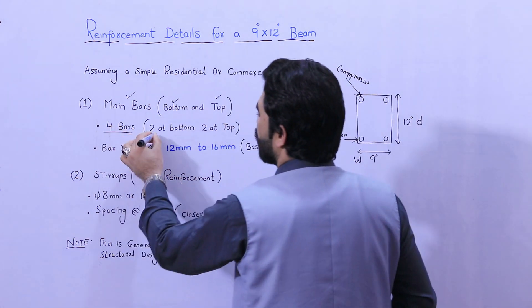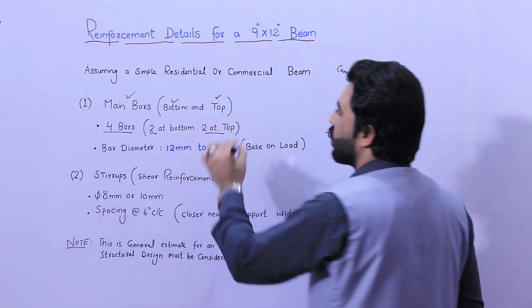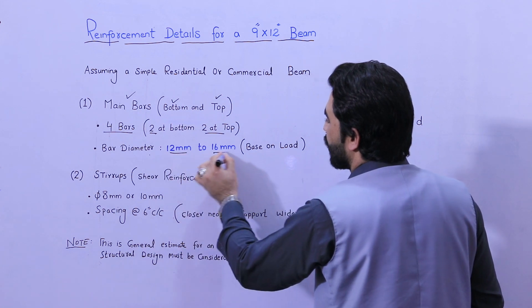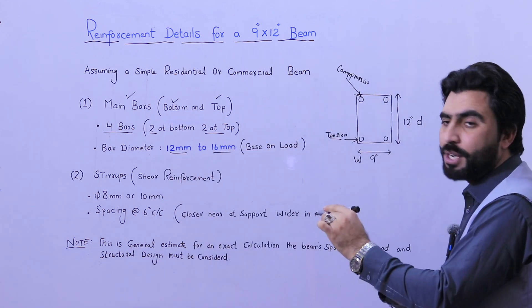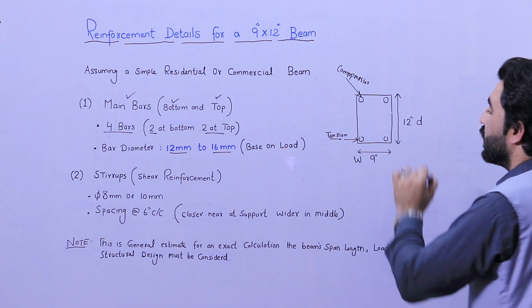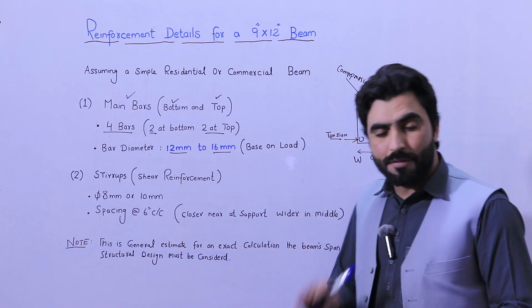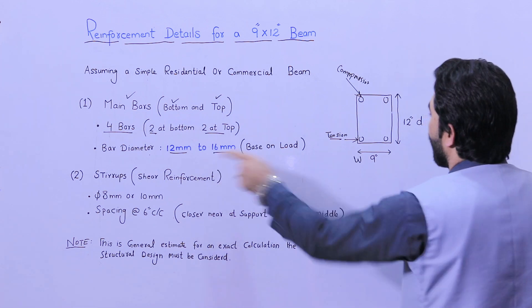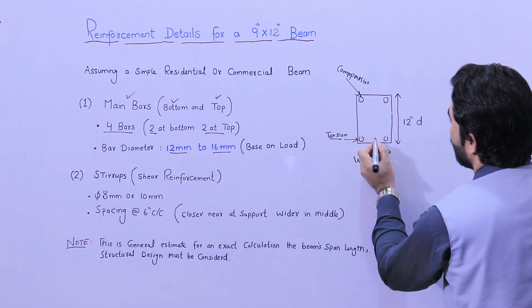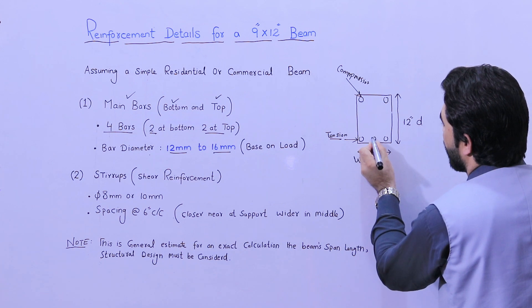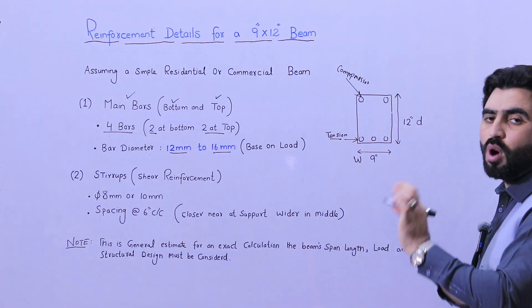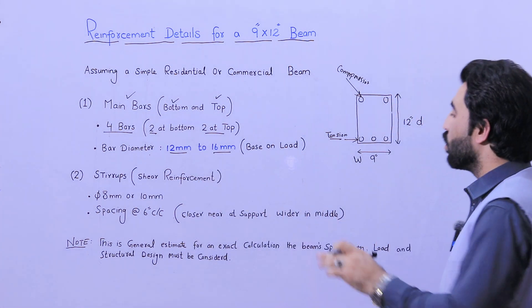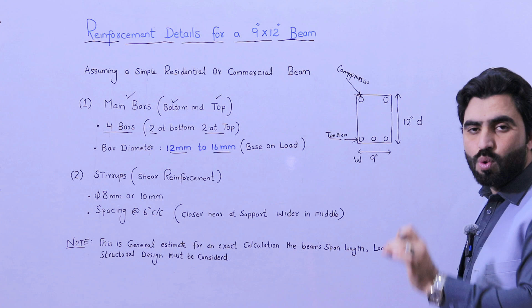We require four numbers of bars, two at the bottom and two at the top. Bar diameter should be 12 millimeter to 16 millimeter, but I recommend you should use 16 millimeter if you are using four numbers of steel rods. But if you are using 12 millimeter diameter steel rods, I recommend you use five numbers of steel rods - three at the bottom, two at the top. All bars diameter should be 12 millimeter. If you are using 16 millimeter, provide four bars, two at the top and two at the bottom.